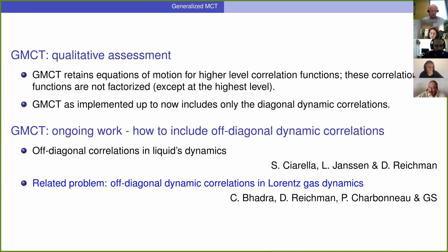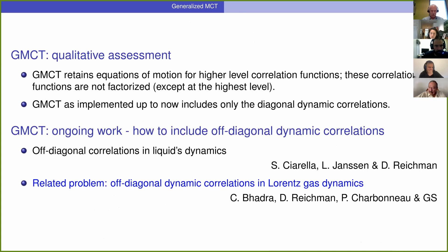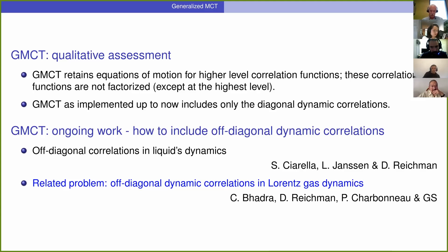To summarize this part of the development: with increasing level of approximation, we can show that the theory describes computer simulations better and better. The theory still predicts an ergodicity-breaking transition, and one of the problems — maybe the reason it still does — is that it only includes some of the dynamic correlations, so-called diagonal dynamic correlations. There is work to include off-diagonal dynamic correlations. I will now switch gears and talk about a related problem: including off-diagonal dynamic correlations in Lorentz Gas dynamics.